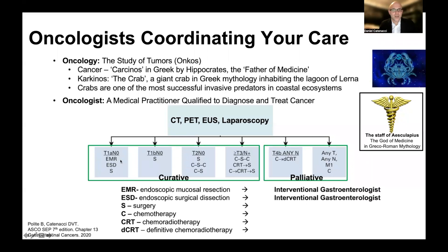In the very early setting, where it's a T1A very superficial tumor with no clinical nodes involved, these tumors are amenable to surgery, but also a discussion would be had about whether an interventional gastroenterologist could perform an endoscopic mucosal resection — a resection of the superficial epithelial layer — or a more deep dissection called an endoscopic surgical dissection, or ESD. These two procedures are performed usually as a day procedure, and then you go home the same day. Interventional gastroenterologists are subspecialists within gastroenterology, after completing training where they can do endoscopies and colonoscopies just to look and see.